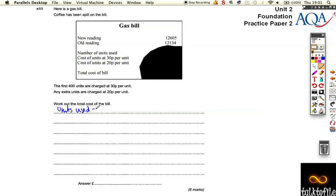Now, the way we're going to do that is we're going to take the new reading, so the current reading, which is 12605, and we need to take away 12134.